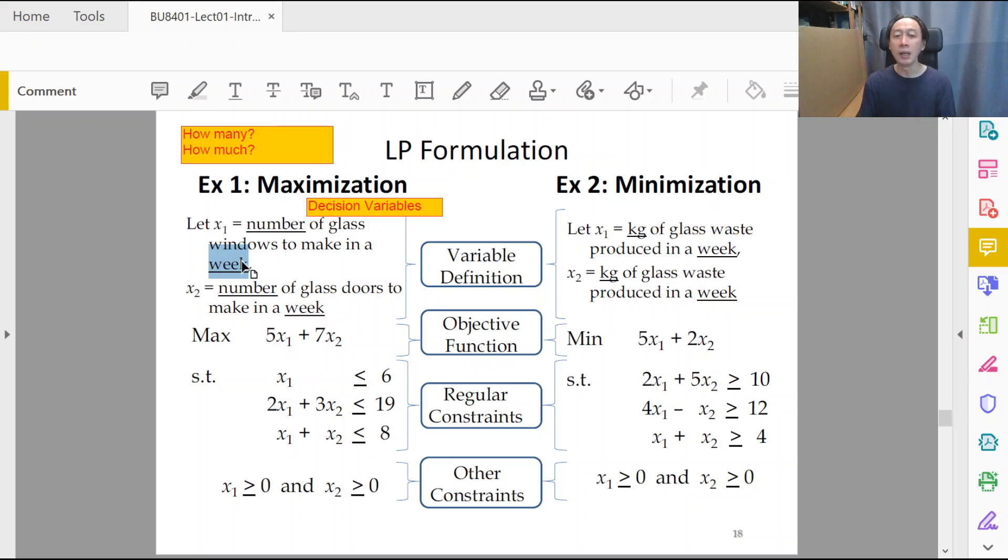It is the number, and the next attribute that you must pay attention to and must write in is the time duration. The unit and the time duration, by far, will be very common across all kinds of decision variables, and I will insist that you must always put them in.